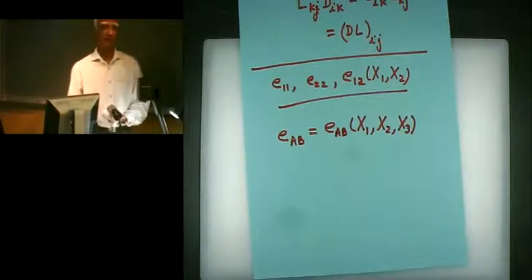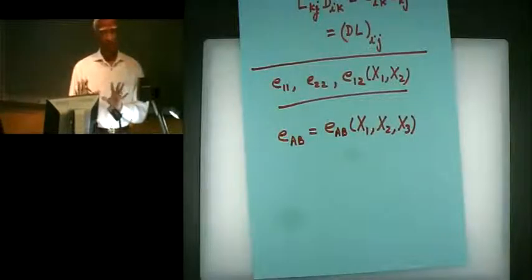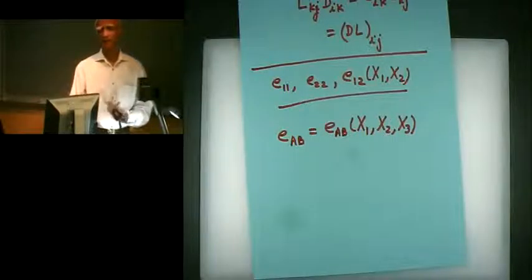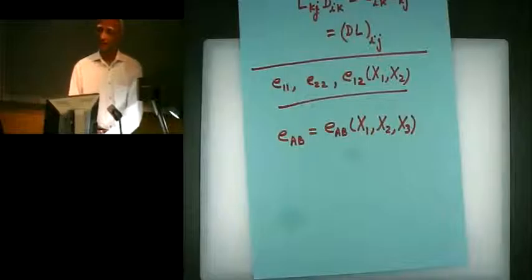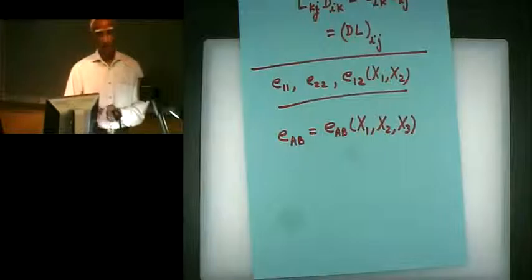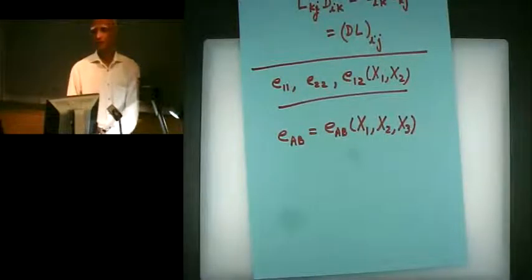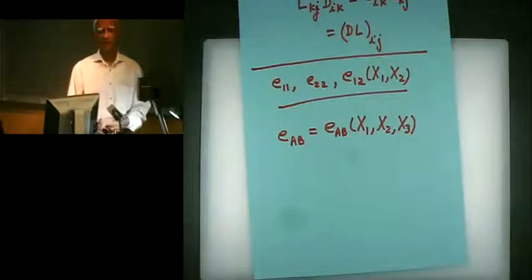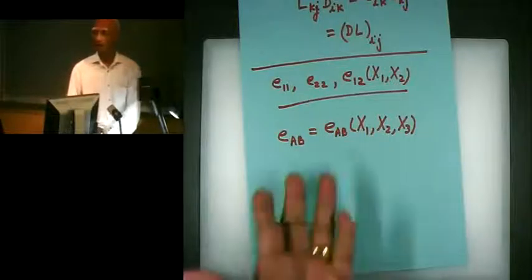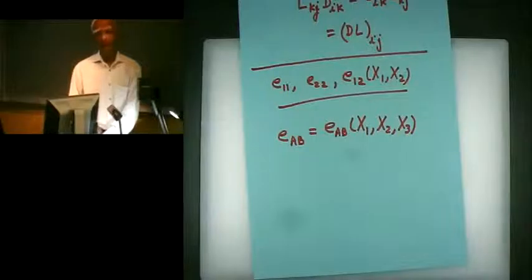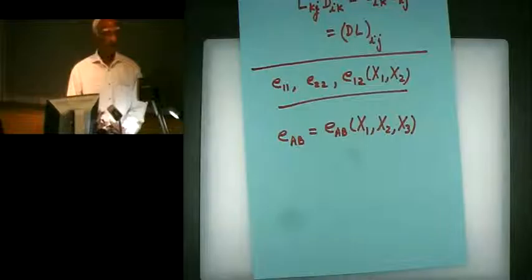We have strain gauges in the interior of the body too. Imagine we have wireless instruments — strain gauges that can transmit data without connecting wires. So imagine our strain gauges are wireless; we have embedded them in the body, applied loads, and they give us data at several points. We have fitted smooth curves to them and gotten all six components of strains as functions of X1, X2, and X3. The question is: is our data correct?